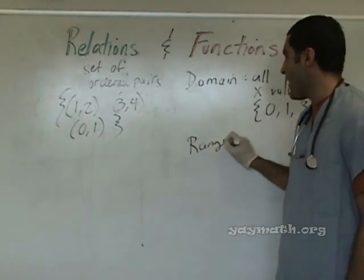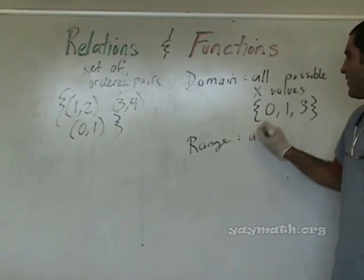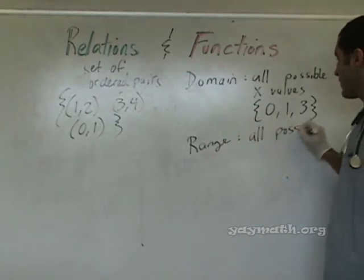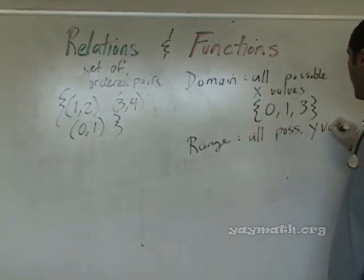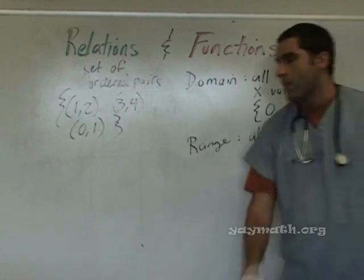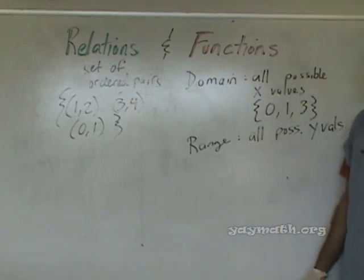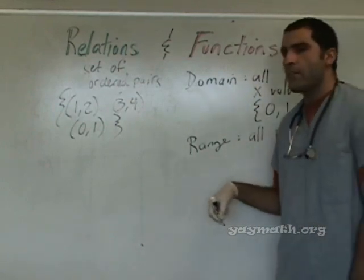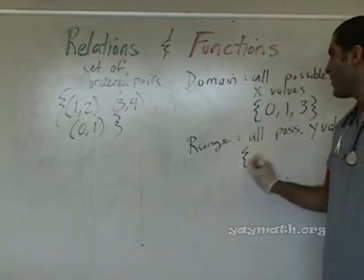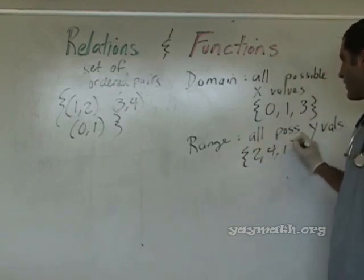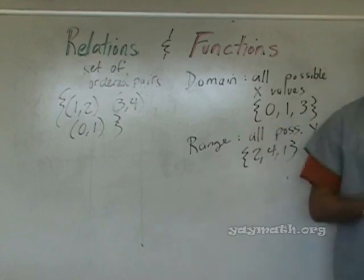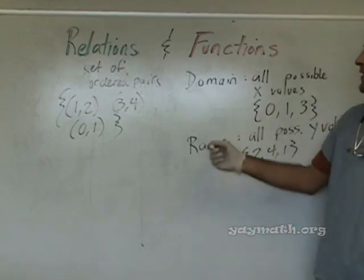Range subsequently. What do you think it is? All possible? Y values. All possible Y values. All right. And what are the possible y values in this case? Two, three. Two, four, and one. Okay. And, by the way,